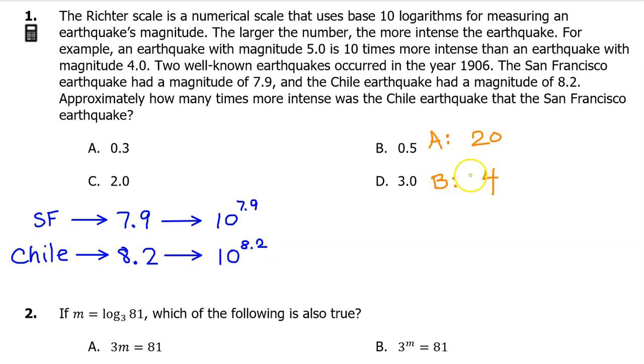So, quick side lesson. Consider number A, which is 20, and number B, which is 4. If I wanted to figure out how many times bigger number A is than number B, I would divide. 20 divided by 4 is 5, which tells me that number A is 5 times bigger than number B.